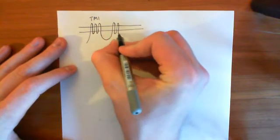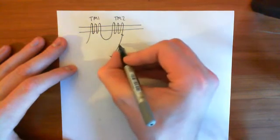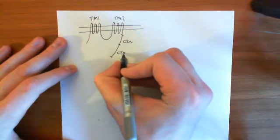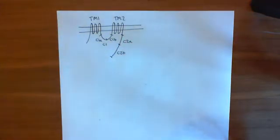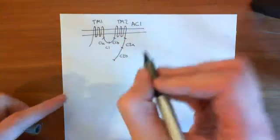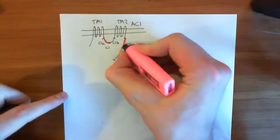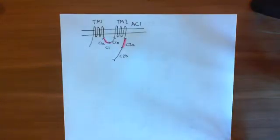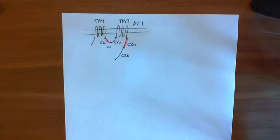We have the C1 loop connecting TM1 to TM2, and coming off TM2 we have the C2 portion, which can be divided into C2A and C2B. Similarly, C1 can be divided into C1A and C1B. When adenylyl cyclase 1 is inactive, the two portions of the active enzyme — C1A and C2A — are not together. They need to dimerize in order for the enzyme to be active, so you need to bring C1A and C2A together to get an active adenylyl cyclase enzyme.